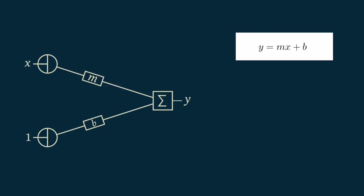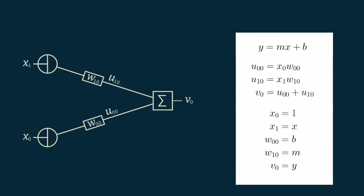And the box with the capital sigma indicates that whatever goes in on the left gets added together and spit out on the right. We can change the names of all the symbols for a different representation. This is still a straight line relationship. We've just changed the names of all the variables. The reason we're doing this is to translate our linear regression into the notation we'll use in neural networks.